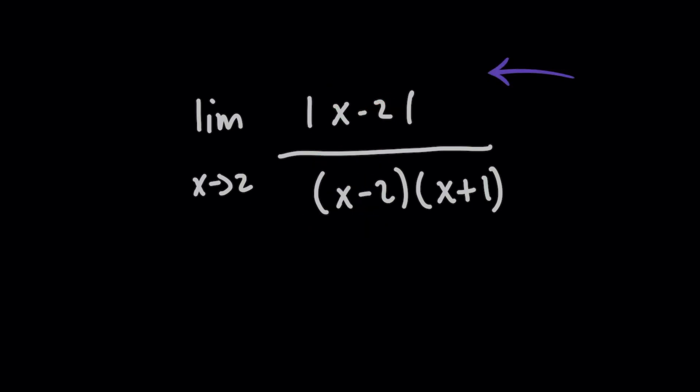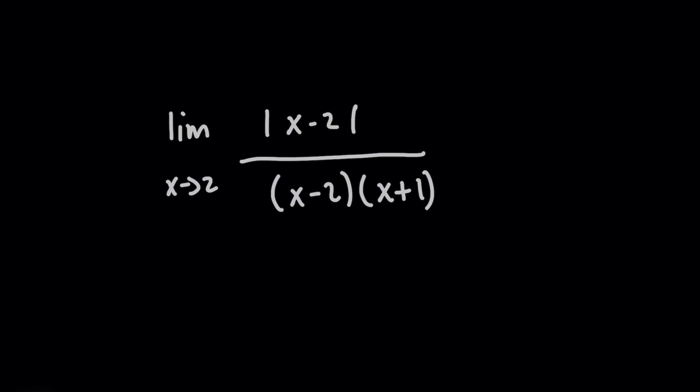You have an absolute value sign up here. So you actually have to look at the behavior of what's happening with that expression when you approach the value of 2 for x from the left, and then when you approach it from the right. So you really should break up this limit into two separate piecewise problems.